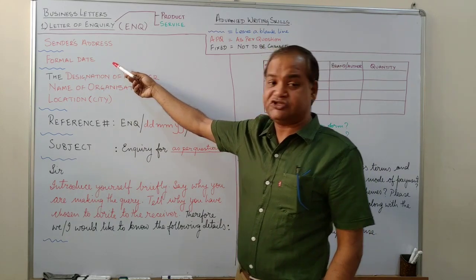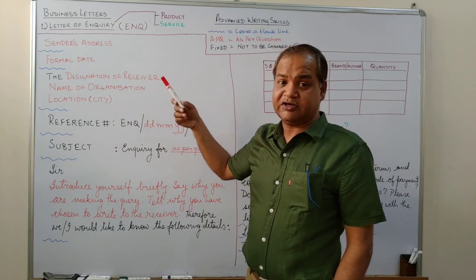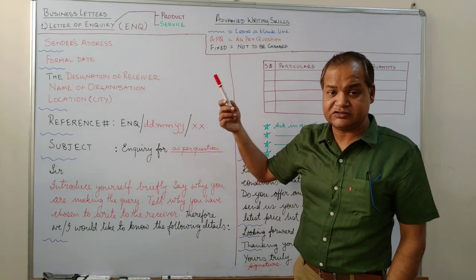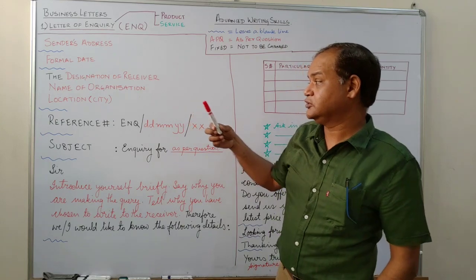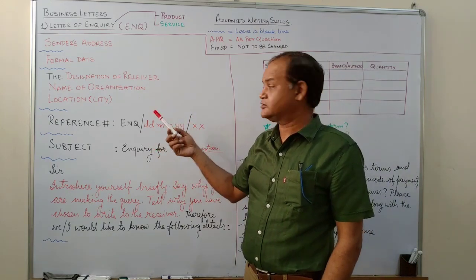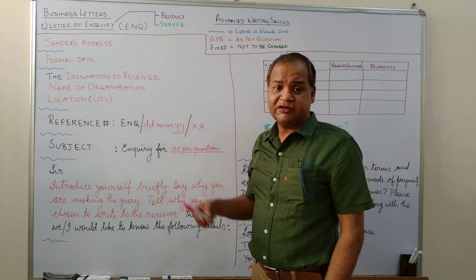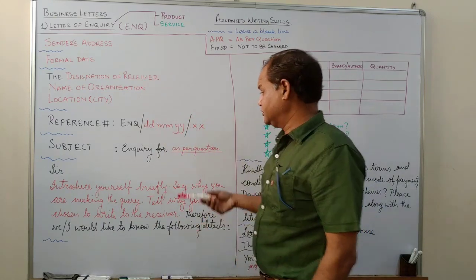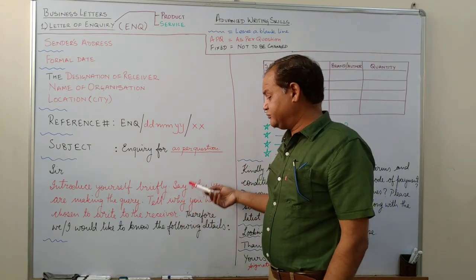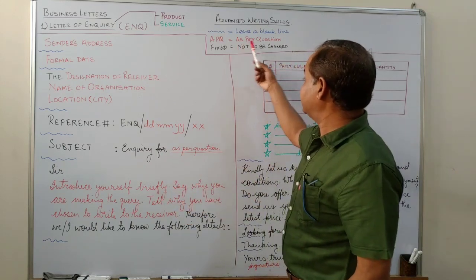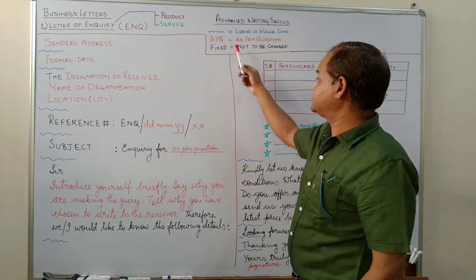Sender's address is given to you in the question so it has to be asked per the question. Similarly the date on which you're writing it will be asked per the question. Again the designation of the receiver you might be writing to various types of designations like to the manager, to the assistant manager, to the general manager, to the sales manager, to the purchase manager or anybody else. Name of the organization again will be given to you. So will be the location of the organization. So anything that is written in this bright red color will be dependent on the question, will be asked per the question.